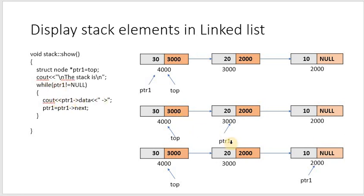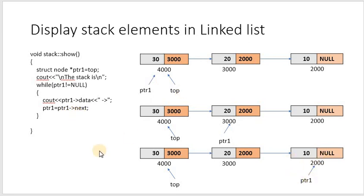ptr->data is 20, and ptr->next is 2000, so it moves there. Again the loop checks: ptr (2000) not equal to null — true — so ptr->data displays 10. Then ptr = ptr->next, which is null. The loop checks again: null not equal to null — false — so it exits the show function. This is how the display works.